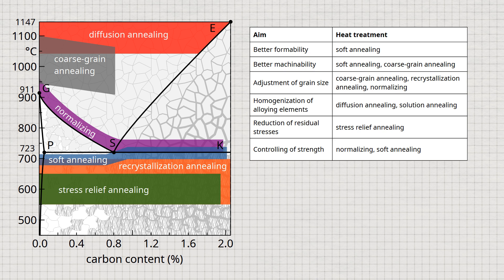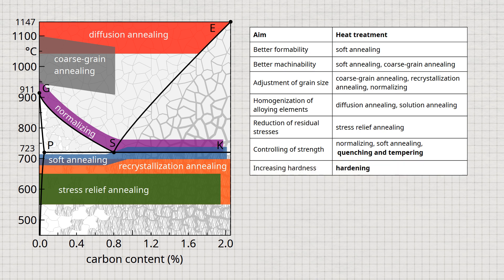Strength can also be controlled by a special heat treatment called quenching and tempering. Hardness can also be controlled by hardening as a further heat treatment. Whereas the driving force for the microstructural change in the above-mentioned annealing processes is always the achievement of a lower-energy state — the pursuit of thermodynamic equilibrium — quenching and tempering deliberately induces a thermodynamic state of disequilibrium in the microstructure. Thermodynamic equilibrium is deliberately prevented by rapid cooling. Due to the complexity of hardening and tempering, we will go into more detail in a separate video.